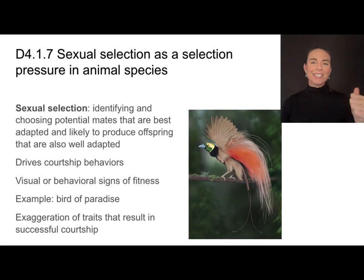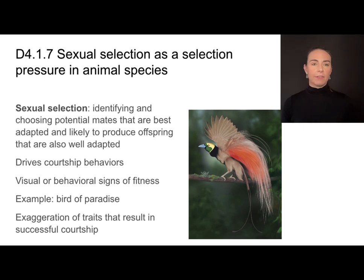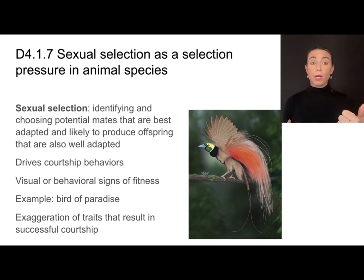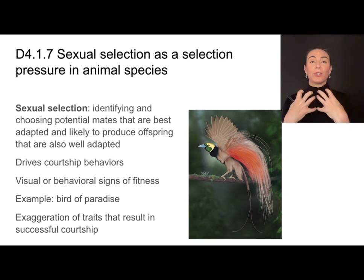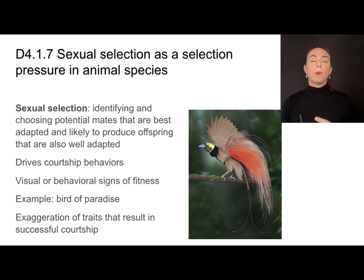Abiotic factors like temperature and soil minerals are important selection pressures, but so is sexual selection, which is an example of a biotic factor. Sexual selection is the process of identifying and choosing potential mates that are best adapted, meaning they are more likely to produce offspring that are also well-adapted. When we talk about fitness in terms of reproduction, we're really talking about heritable traits that give you an advantage in the sexual selection process.